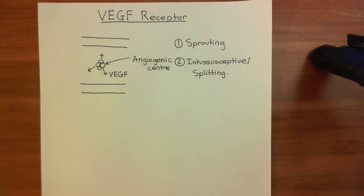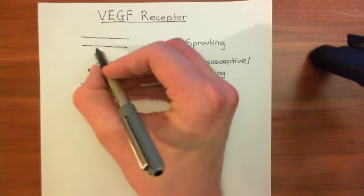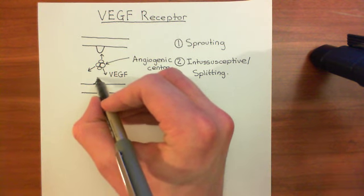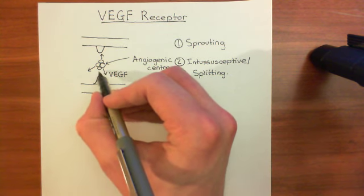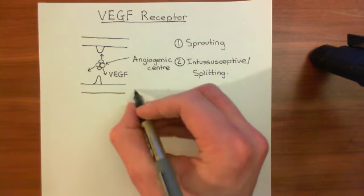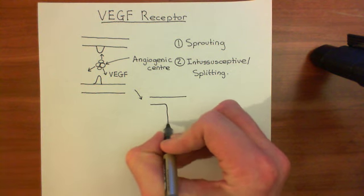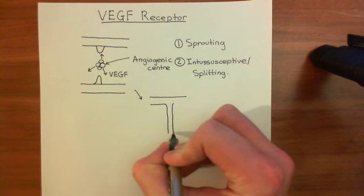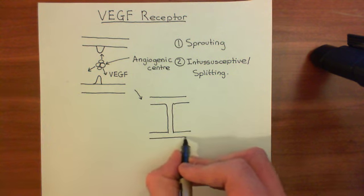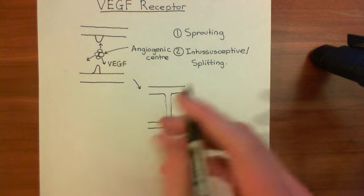Sprouting angiogenesis is where the capillary sprouts a little stalk — a little bud. The capillary gives off a little bud, and the capillary down here will also give off a little bud. These buds grow towards the angiogenic centre, meet one another, and the result is a whole new blood vessel connecting the two capillaries, going right through where the angiogenic centre was. That cluster of cells is therefore no longer hypoxic because it has a new capillary feeding it.